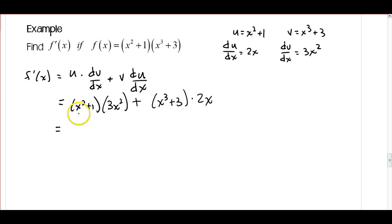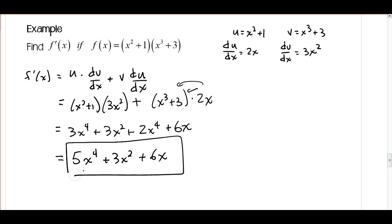And then I'm going to do a little simplifying, so distribute this. So I've got 3x to the fourth plus 3x squared, and then I'm going to distribute over here too, so plus 2x to the fourth plus 6x. And then a little more simplifying, combining like terms, I end up with 5x to the fourth plus 3x squared plus 6x. Okay, so there's my product rule in action.